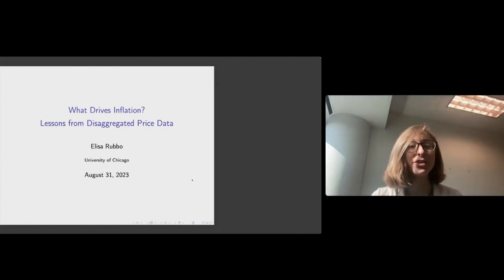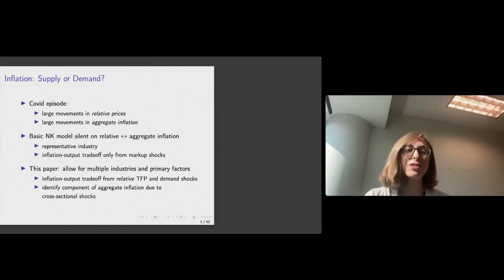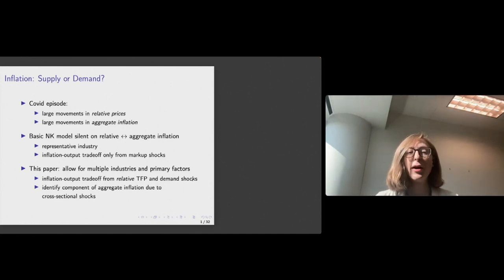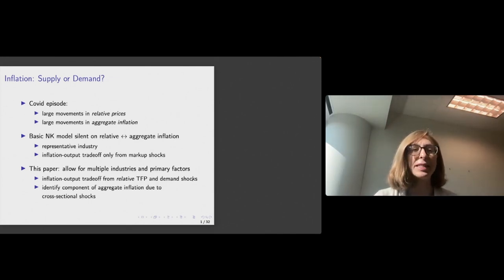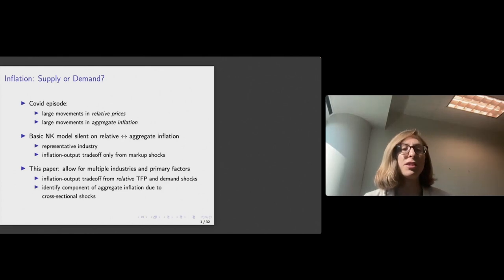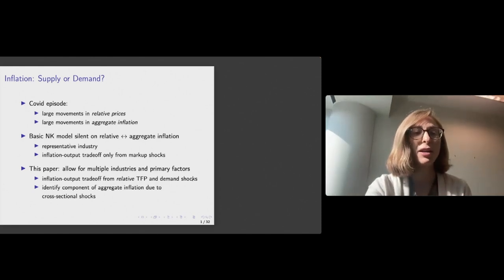Inflation during the COVID period was a puzzle. People wondered whether the main determinant was coming from the supply side — such as bottlenecks and shortages — or from the demand stimulus packages that were put in place. In favor of the supply-side story, people observed that during COVID there was not just a large increase in aggregate inflation but also large movements in relative prices, suggesting sectors were facing different shocks with consequences for aggregate inflation.